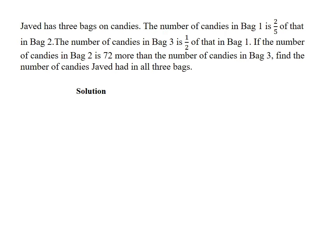Javed has three bags of candies. The number of candies in bag one is two-fifths of that in bag two. The number of candies in bag three is a half of that in bag one. If the number of candies in bag two is 72 more than the number of candies in bag three, find the number of candies Javed had in all three bags.